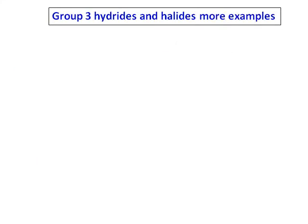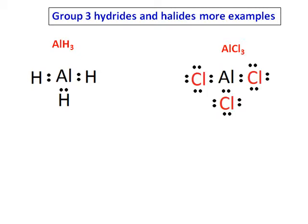Let's consider a few more examples. Instead of boron, I can consider aluminum hydride and aluminum chloride also. Aluminum hydride has only 6 electrons around it. If I draw the Lewis structure of aluminum chloride, that also has only 6 electrons around it.